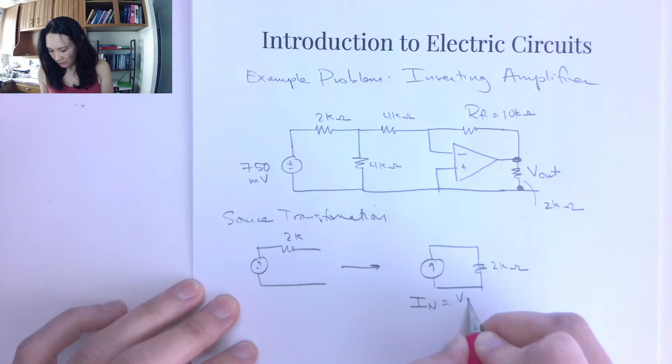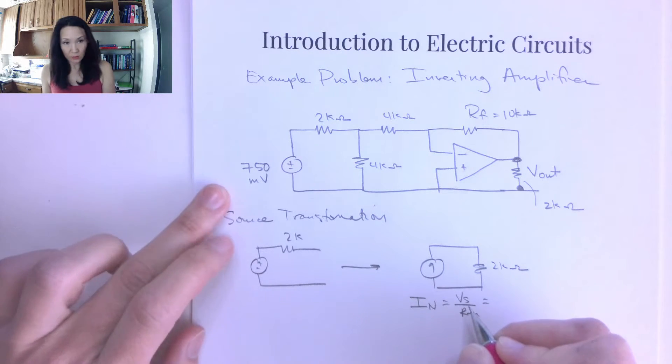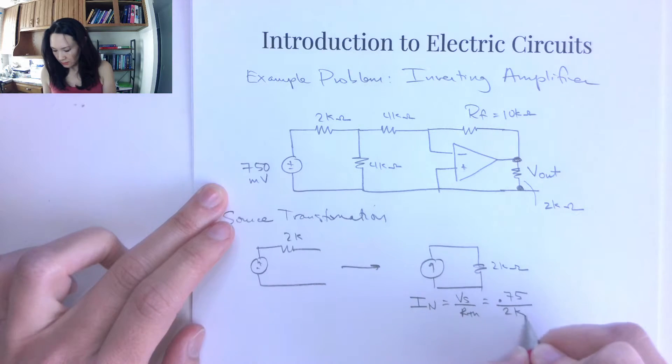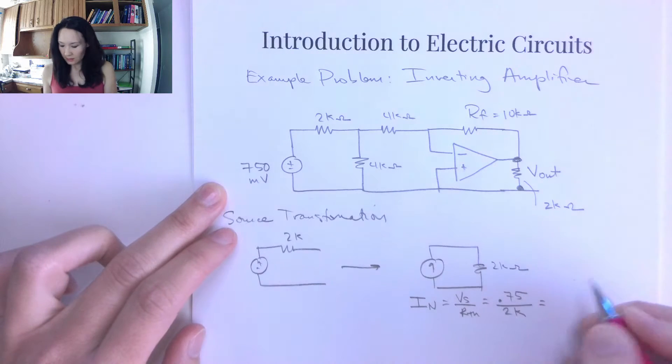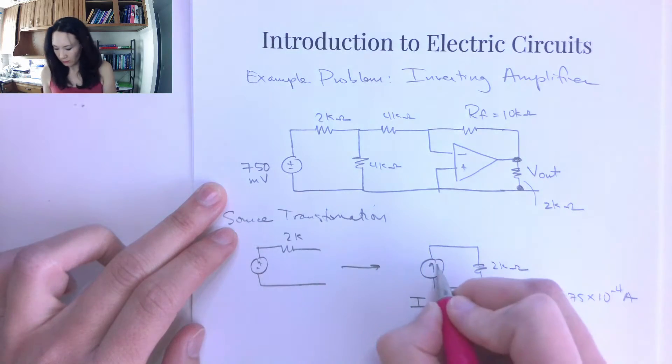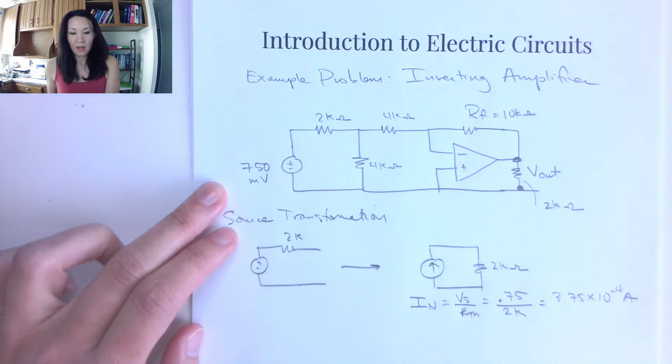This is going to be my V source divided by my R-thevenin. So my V source was given as 0.75 volts. R-thevenin is 2k in this case. So here I get 3.75 times 10 to the negative 4th amps. So that's the value of this equivalent current source here. Okay, great.